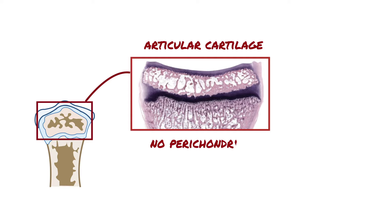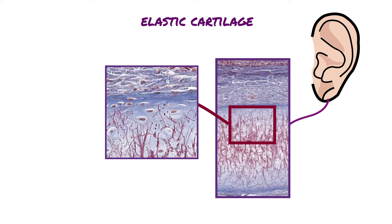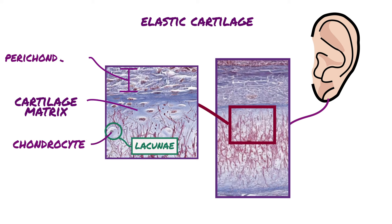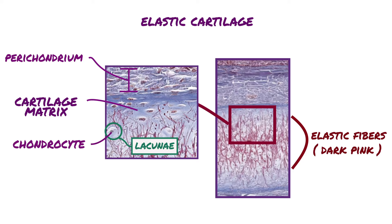Now let's talk about elastic cartilage. Elastic cartilage is found in the epiglottis, larynx, and the pinna of the external ear. This image is from the pinna of the external ear. We can see some general features of elastic cartilage that are similar to hyaline cartilage, such as the cartilage matrix, which stains blue, the chondrocytes within lacunae, and the perichondrium at the top, which is stained purple and dark blue. However, unlike hyaline cartilage, elastic cartilage has an abundant network of elastic fibers, which gives this type of cartilage its flexibility and elastic characteristics.